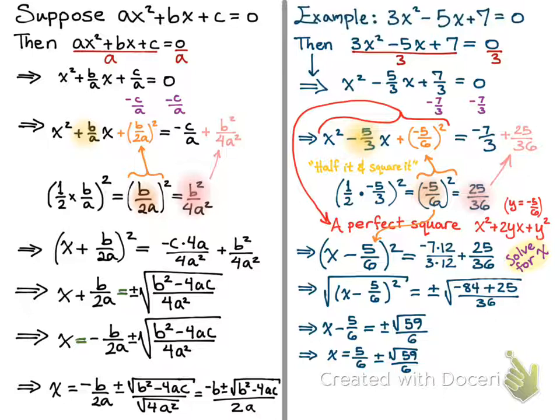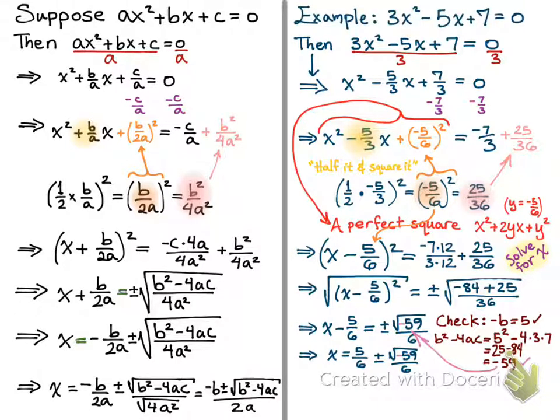Now let's verify using the specific case. Negative b equals 5. b squared minus 4ac equals 5 squared minus 4 times 3 times 7, which is 25 minus 84, equaling negative 59 — I had dropped my negative sign earlier, so I'll put that back in. And 2a equals 6. Everything checks out, and that's the end of the proof.